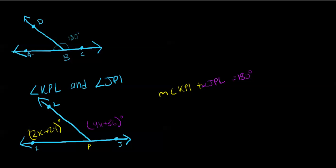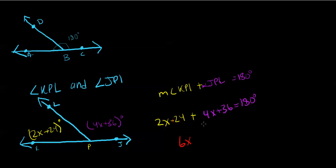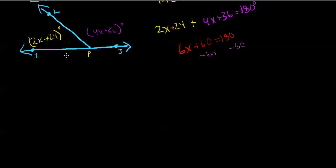Now we can substitute in the values. The measure of angle KPL, which is 2x + 24, plus the measure of angle JPL, which is 4x + 36, equals 180. Combining like terms: 2x + 4x = 6x, and 24 + 36 = 60, giving us 6x + 60 = 180. Subtracting 60 from both sides gives 6x = 120. Dividing both sides by 6, we get x = 20.